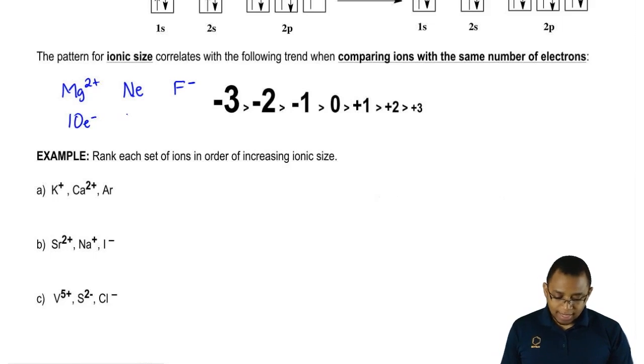Neon, neon is neutral, so it has 10 electrons. Neutral fluorine, like we said, has 9 electrons. Minus 1 means it gains 1, so it has 10.